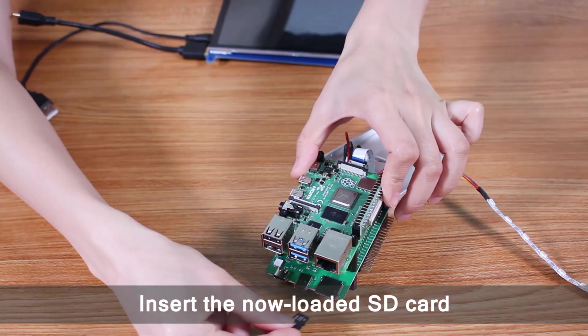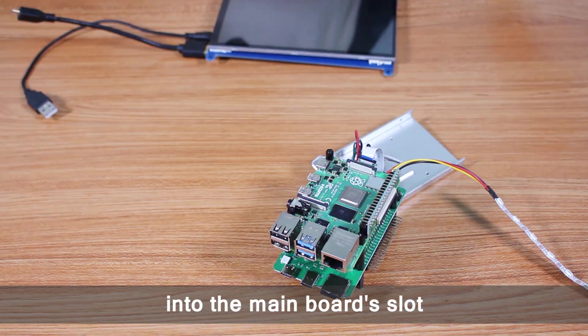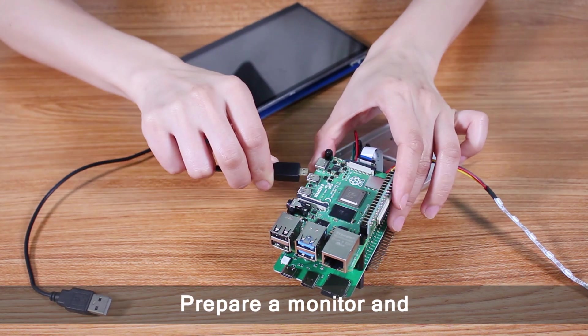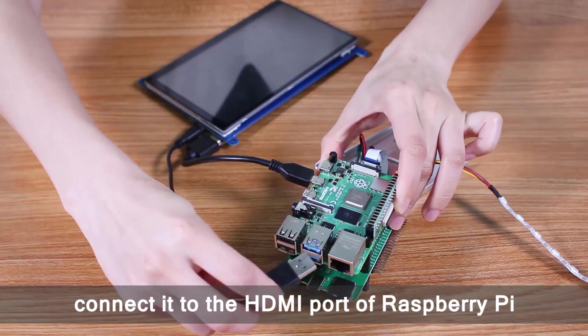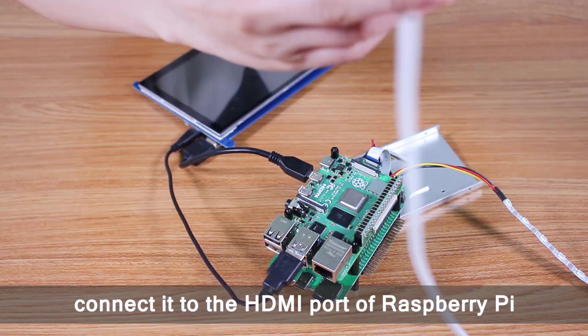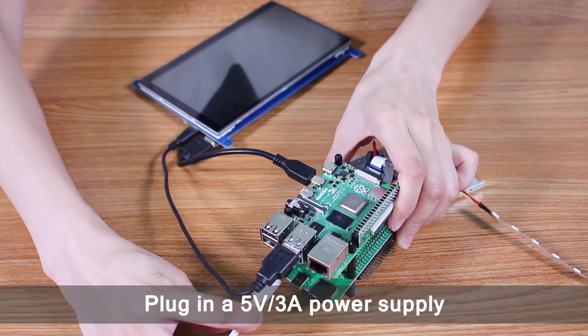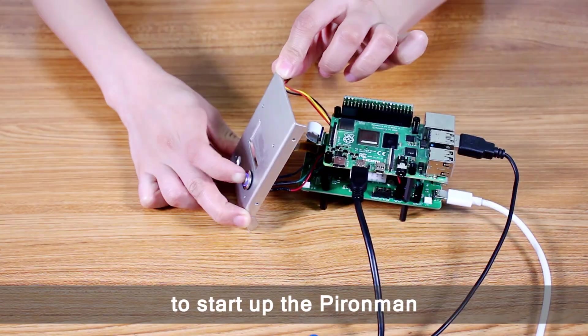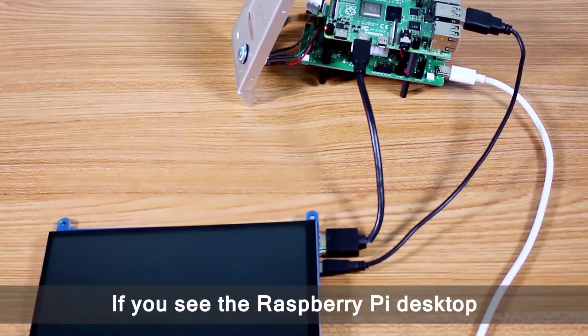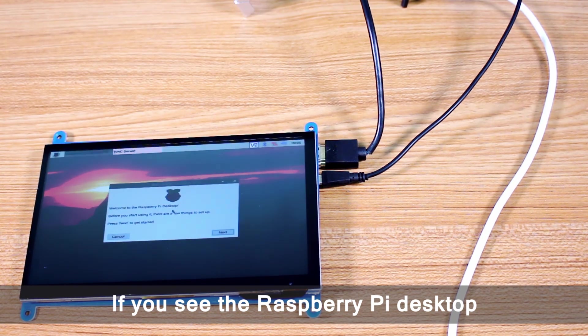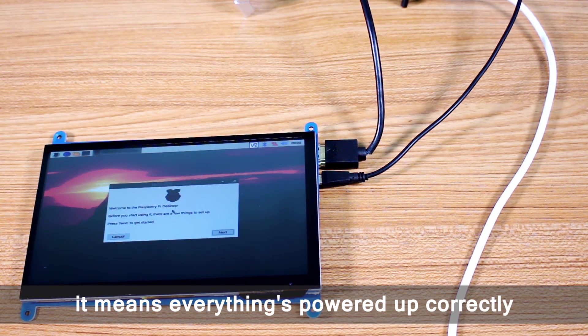Insert the now loaded SD card into the main board slot. Prepare a monitor and connect it to the HDMI port of Raspberry Pi. Plug in a 5 volts, 3A power supply, and press the power button to start up the Pyramin. If you see the Raspberry Pi desktop, it means everything's powered up correctly.